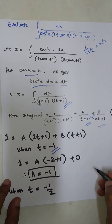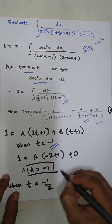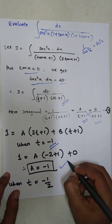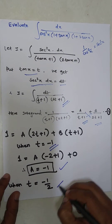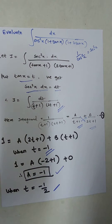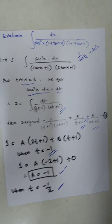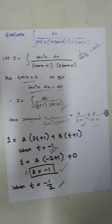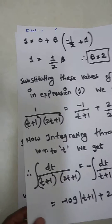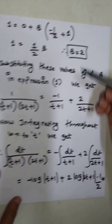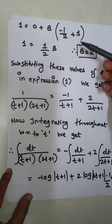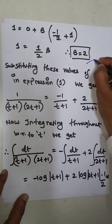When t = −1, we get the value of A. When t = −1/2, we get the value of B. Solving, we find B = 1 and determine the corresponding value of A as well.